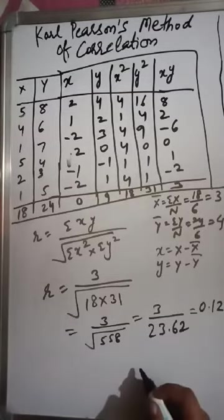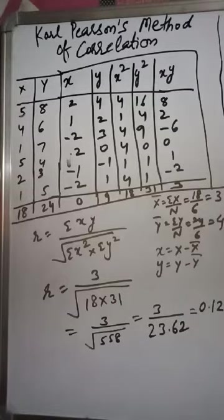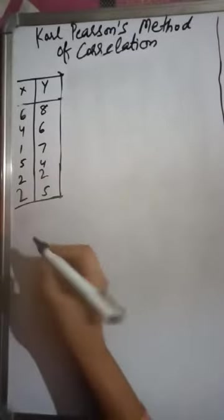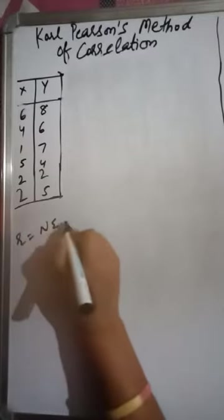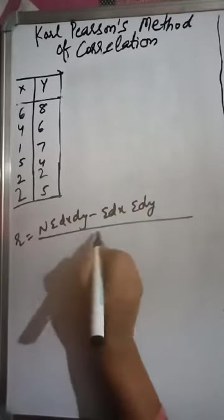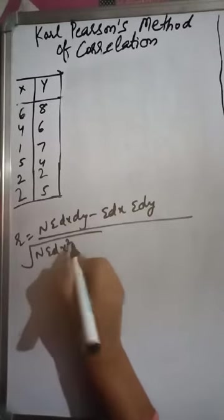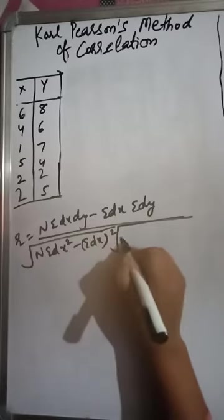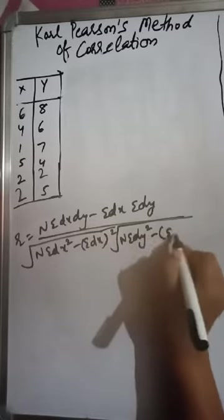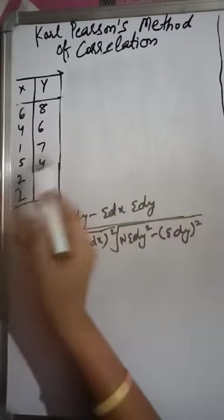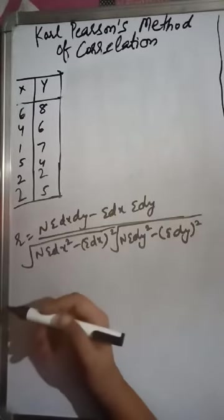In the next example, we will use the assumed mean method. If the actual mean turns out to be a fractional number, we use this method. We can assume any convenient value as the assumed mean — for example, one of the observations, or any other suitable value.